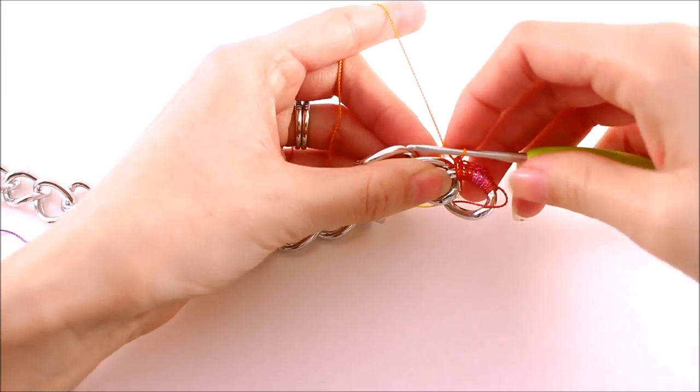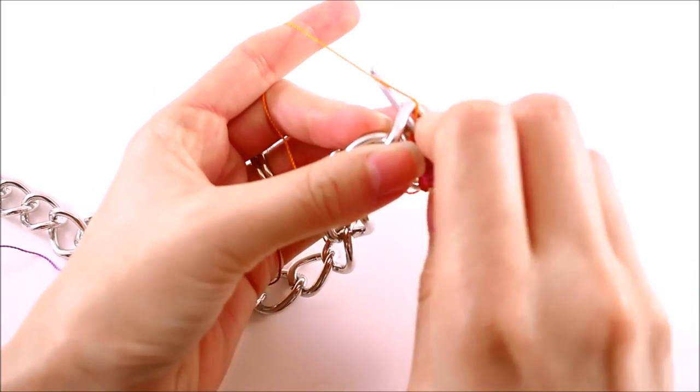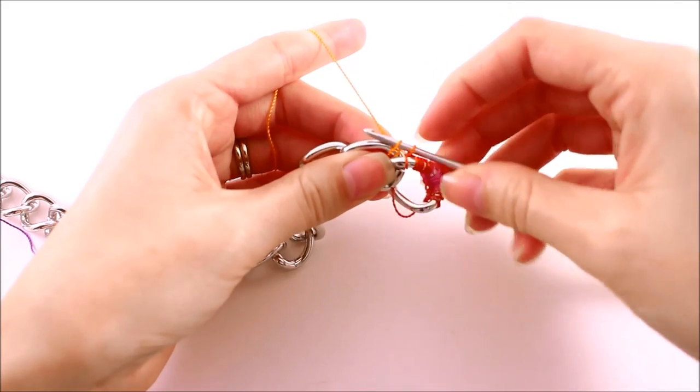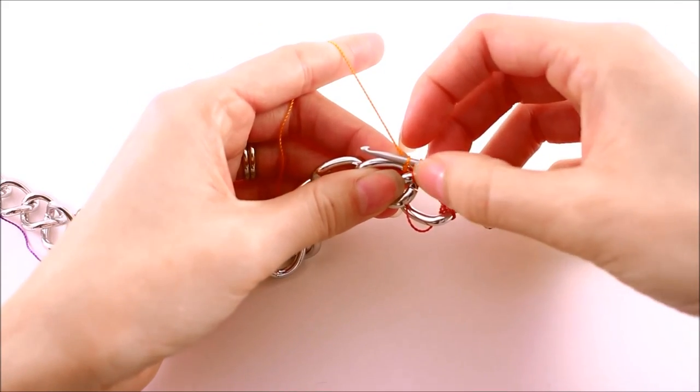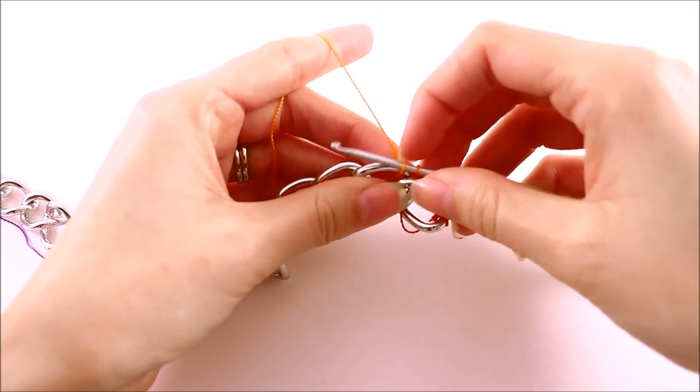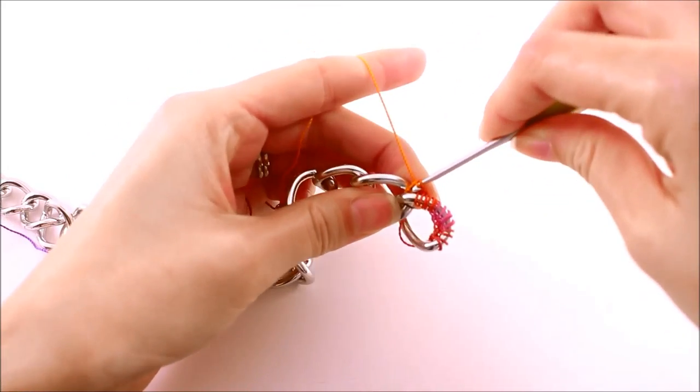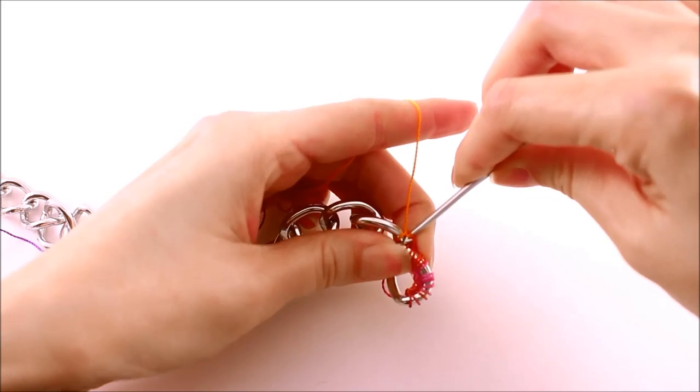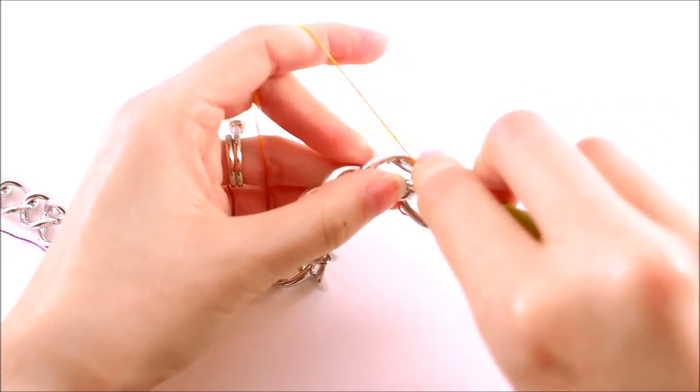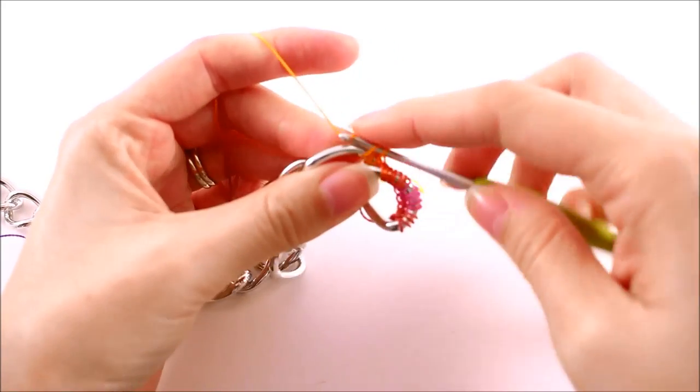We're just going to insert our hook into that next chain and then yarn over and pull up a loop. You want to make sure this single crochet is a little bit tighter because we're bridging the gap between these two chains. If your tension is too loose, it'll be a little bit floppy on the edge here in between the two chains. So just finish that single crochet. That's going to be our first one for the second chain. So we want to make a total of eight, and we're just going to proceed as we did before.